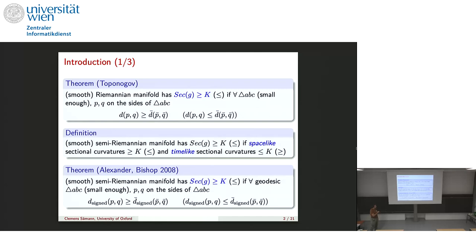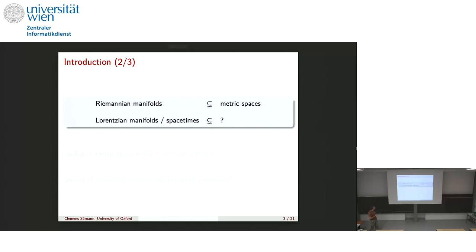For all geodesic triangles small enough, you take two points p, q on the sides and look at the signed distance. The signed distance is the length of the unique shortest geodesic connecting them: positive if they are spacelike related, negative if timelike related, and zero if null related. This triangle comparison holds, and this Toponogov-type curvature condition of course makes sense for metric spaces. But the signed distance is not a metric, so what do you do here?